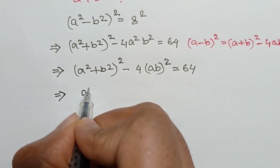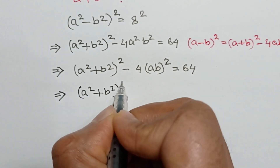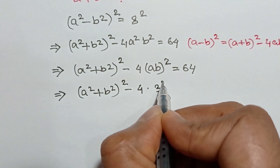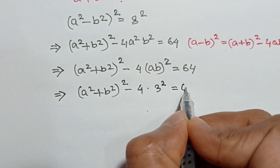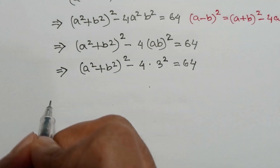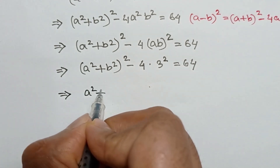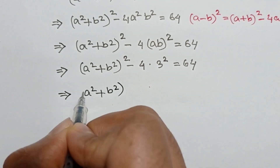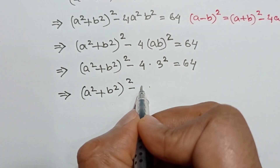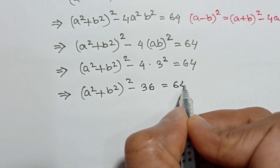Now putting the value of ab equal to 3: a squared plus b squared, whole square, minus 4 times 3 squared is equal to 64. Since 3 squared is 9, and 9 times 4 is 36, we get: a squared plus b squared, whole square, minus 36 is equal to 64.